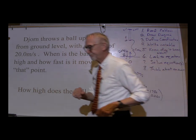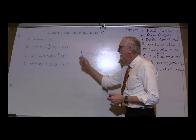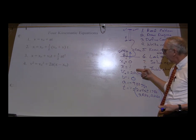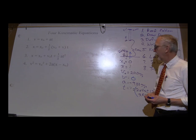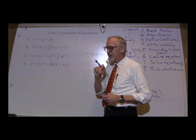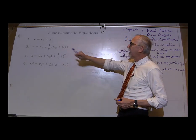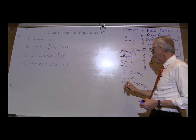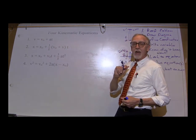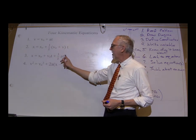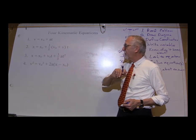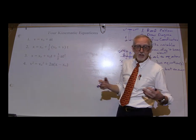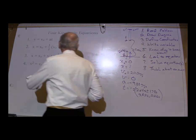Let's go back to the equations and figure out which one to use. We are looking for x, and we know x0, v0, v, and a, but we do not know t. Can we use the first equation? No — it does not have an x in it. The second equation? No — it's got a t in it. The third? Also has a t. Number four — we can use that to solve for x, and there is no t in it.